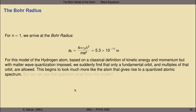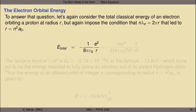In this model of the hydrogen atom based on a classical definition of kinetic energy and momentum, but with matter-wave quantization imposed, we suddenly find that only a fundamental orbit and its harmonics — multiples of that orbit — are allowed. This begins to look a lot more like the atom that gives rise to a quantized atomic spectrum. But the question is, can we see that spectrum arise from this model? To answer this question, let's again consider the total classical energy of an electron orbiting a proton at radius r, and impose the condition that n times lambda equals 2πr.